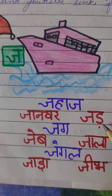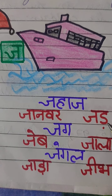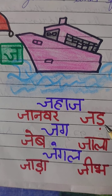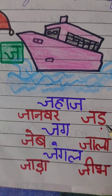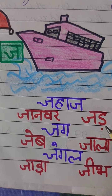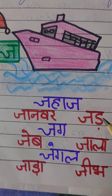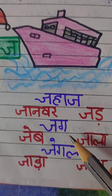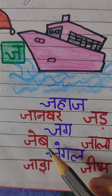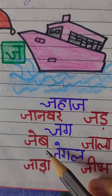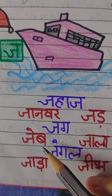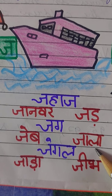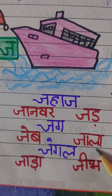J say Jad. Jad means root of a plant or root of a tree — the part which is below the ground. J say Jag. J say Jeb. Jeb means pocket. J say Jala. Jala means web.